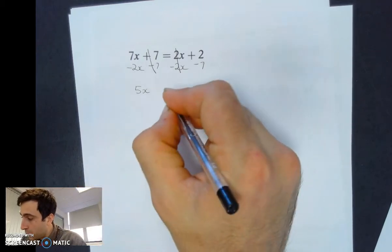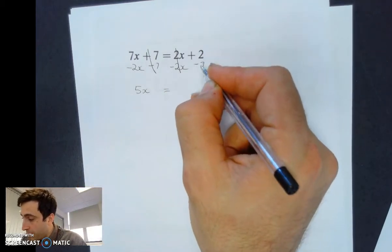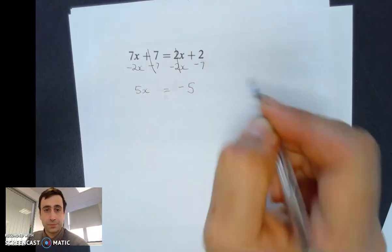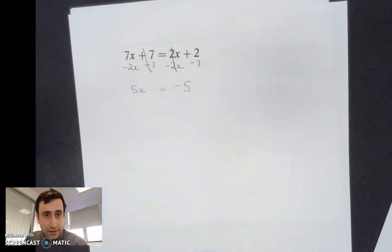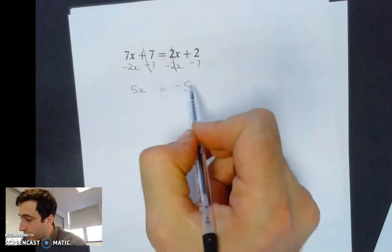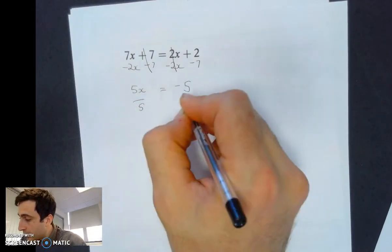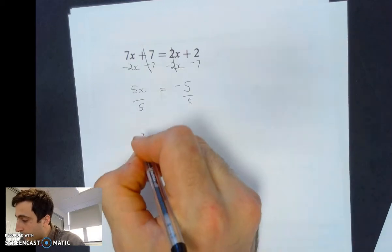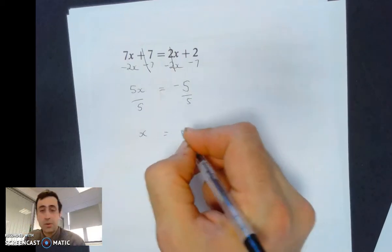And 2 minus 7 is minus 5. I've done it all in one hit. 5x equals minus 5. Divide both sides by 5. And we end up with x equals minus 5 divided by 5, which is minus 1.